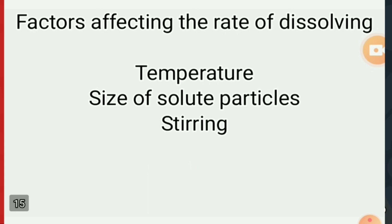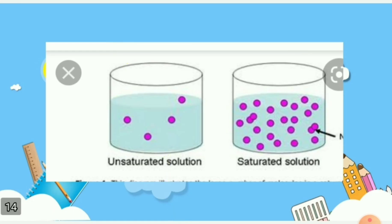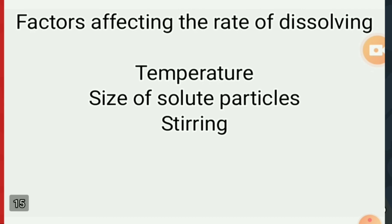Another factor is the size of the solute particles. Fine sugar crystals dissolve very fast, while large sugar crystals dissolve very slowly. Dissolving is also affected by temperature: as I mentioned with saturated solutions, by heating you can make more solute dissolve and even add more spoons of sugar or salt. So the three factors affecting the rate of dissolving are: stirring, size of solute particles, and temperature.